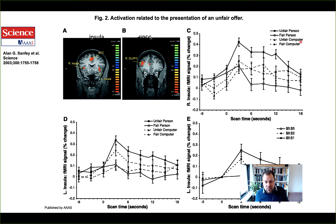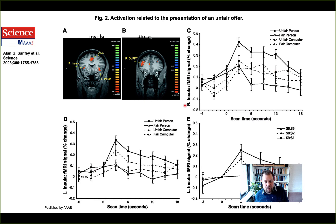Notably, there's a decreased activation when a computer is making an unfair versus fair offer. The insula doesn't seem to take into account a non-social condition. That's an important aspect, because a computer — even if the offer itself is unfair — cannot be truly unfair toward you, since the computer is just following an algorithm, essentially flipping a coin. So this is a nice indication that the insula seems to care particularly about unfair offers in a social context.